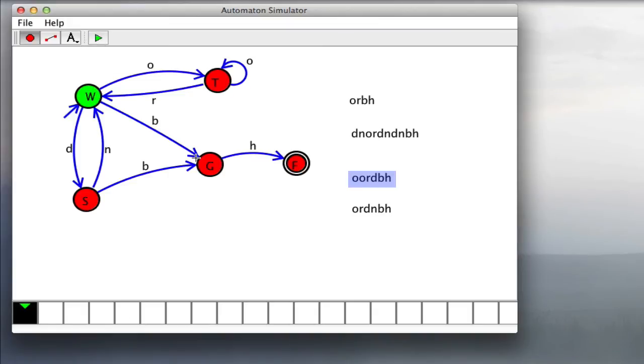The third one: O, O, R, D, B, H. That one's an example of getting the low battery warning while cleaning a dirty spot. And the fourth one we're going to try is O, R, D, N, R, B, H.